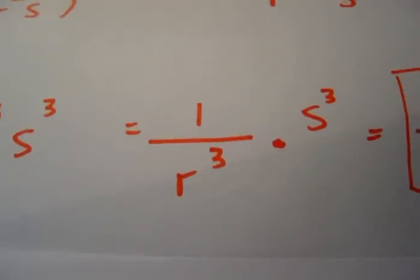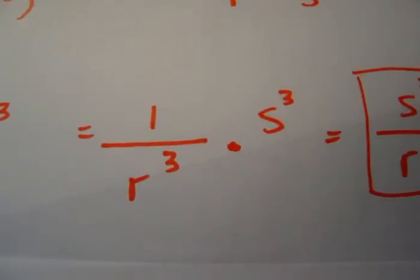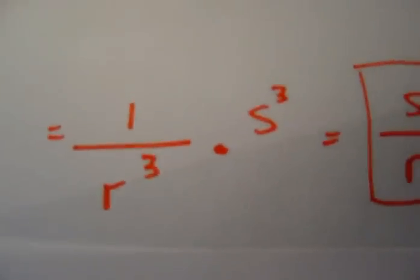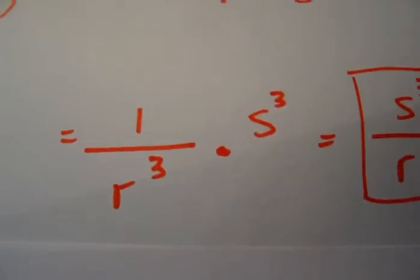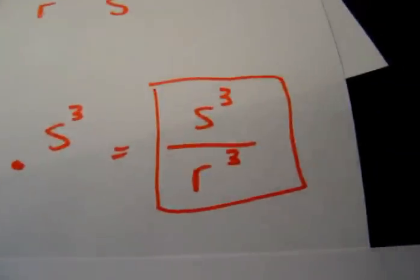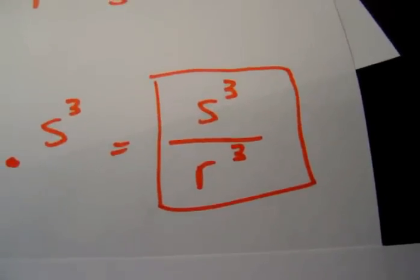There you have it. 1 over r to the 3rd times what's left, s to the 3rd power. Now we're going to multiply. 1 times s to the 3rd power is s to the 3rd power divided by r to the 3rd power.